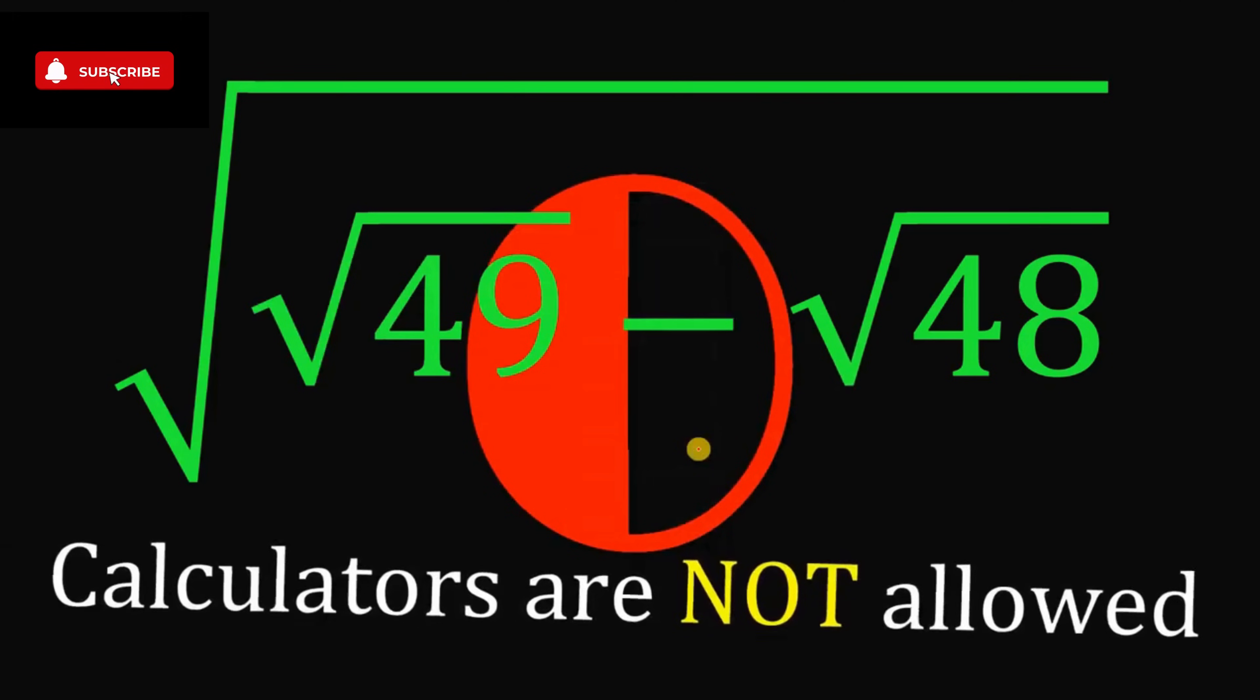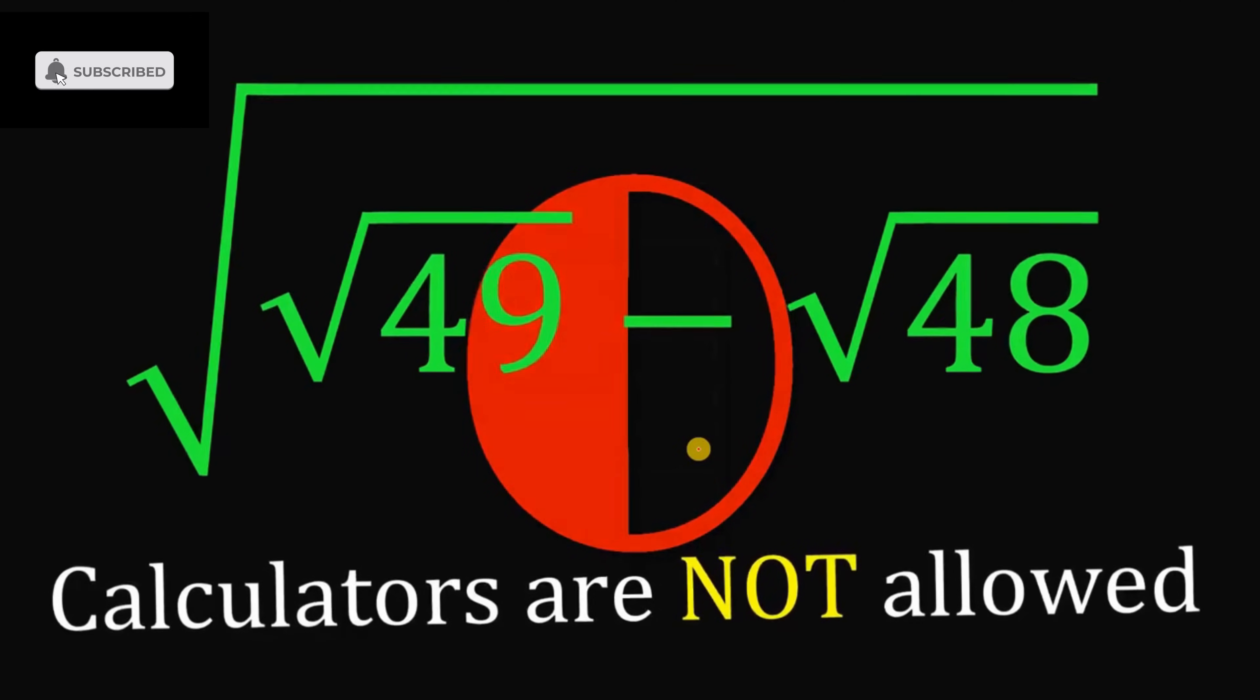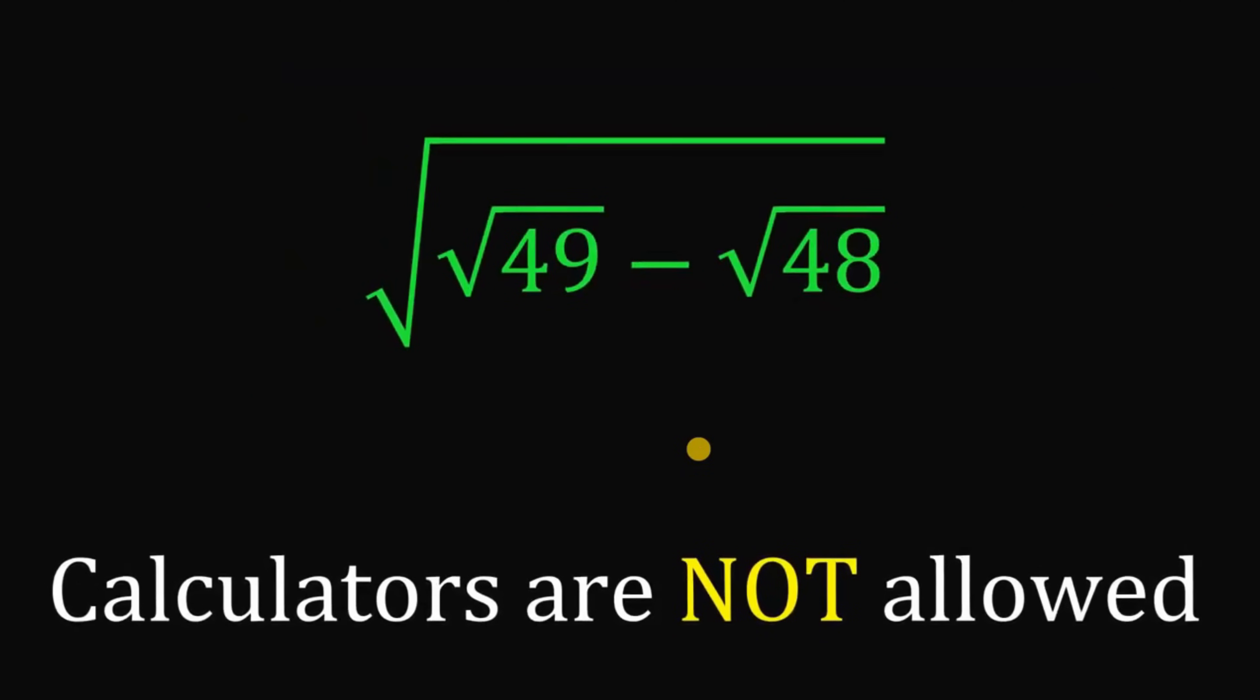And now, let's answer this question together without using any calculator. Alright, so we're given the square root of square root of 49 minus square root of 48. Now one thing we notice here is this 49. This 49 can be written as 7 raised to the power of 2, or 7 squared. And square root of 7 squared, this will give us nicely 7.